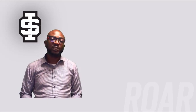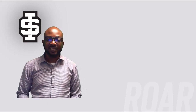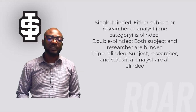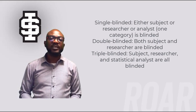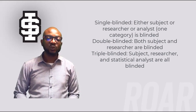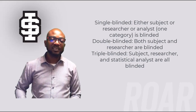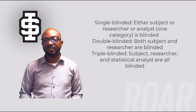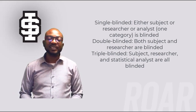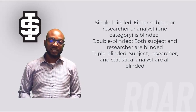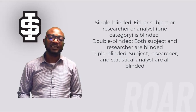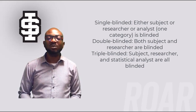Therefore, it may be necessary to prevent researchers and study subjects from knowing who received what. A single-blinded study is one wherein either the subject or the researcher or the analyst — just one category — is blinded. In a double-blinded study, both the subject and the researcher and the statistical analyst are all blinded.